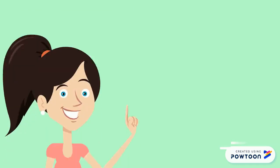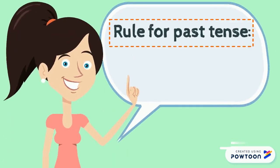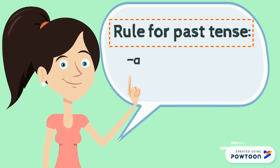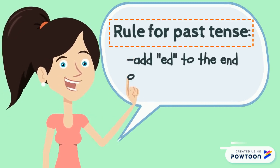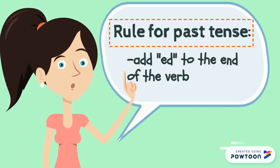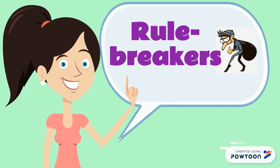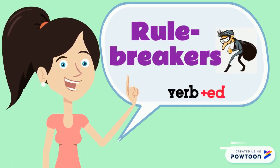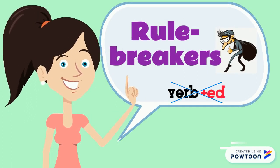So now you know the rule for past tense, which is: add -ed to the end of the verb. But there are some rule breakers. That means some of the verbs do not follow this rule.